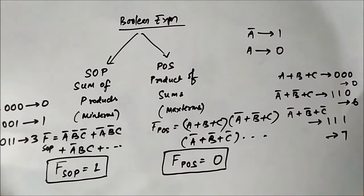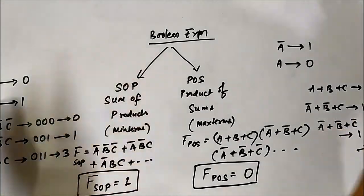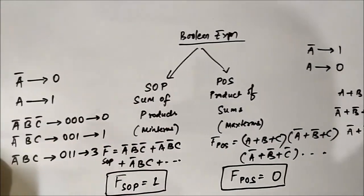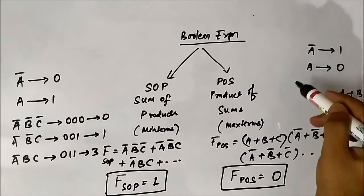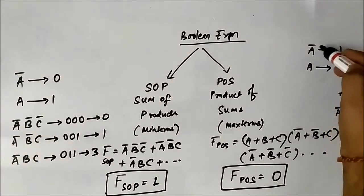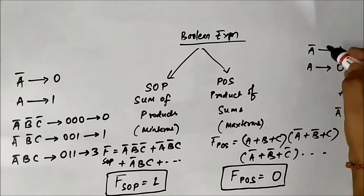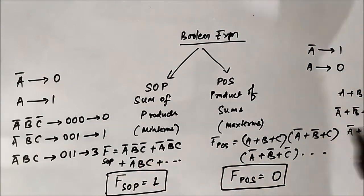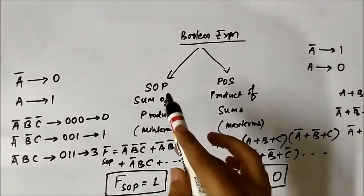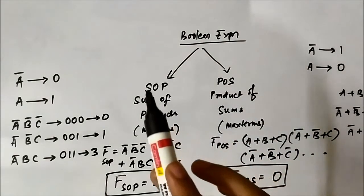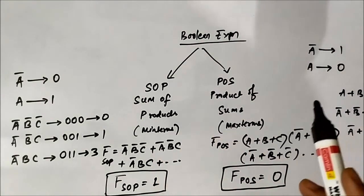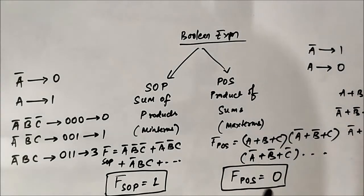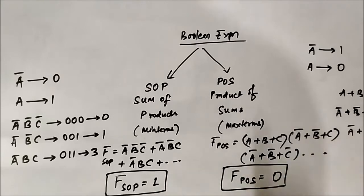These are the basic things I wanted to clarify so that we are clear on these concepts. When we use a particular notation and I say that the uncomplemented variable is 1, you do not have any confusion. I want you to check the videos related to canonical representation, SOP — sum of products — and product of sums. Min terms and max terms videos are already available. You can check those out in the digital electronics playlist.